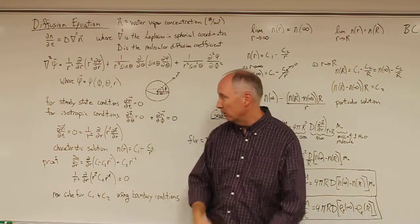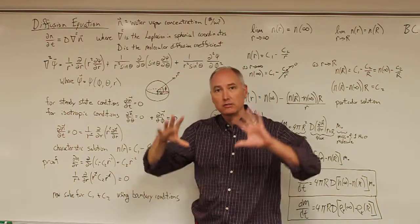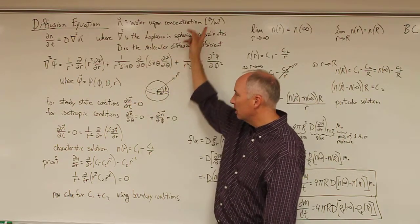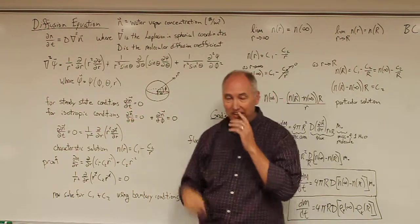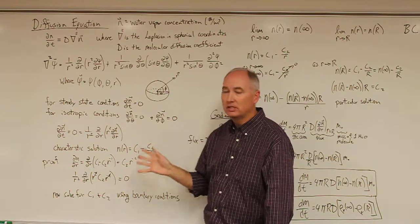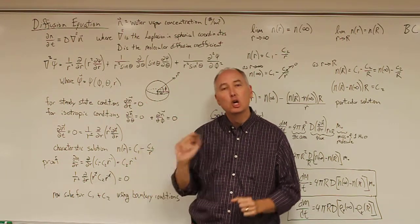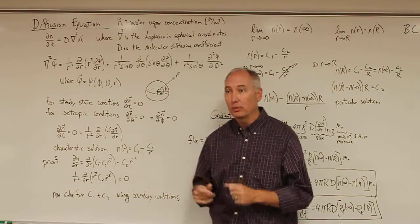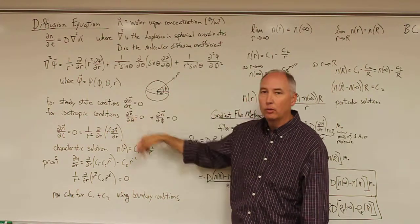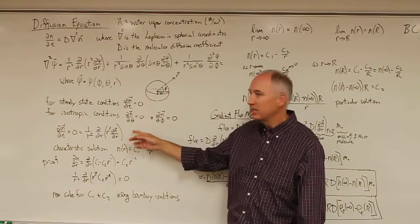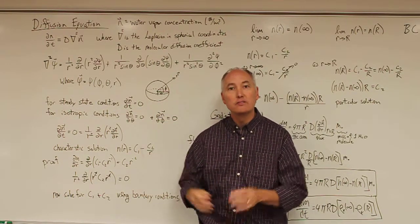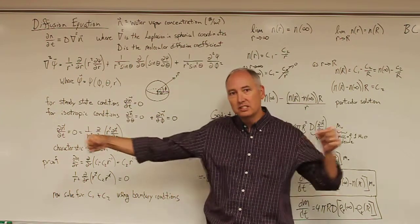We're going to make some simplifying assumptions to make this math much more tenable. The first assumption is steady state — we assume the water vapor concentration around the droplet is not changing. In the real world that doesn't actually happen, since droplets can deplete the water vapor around them, reducing the condensational growth rate. But we assume this is an updraft where water vapor is continually replenished. The second simplifying assumption is isotropic conditions — the water vapor concentration is invariant in the azimuth and zenith directions, so the only variation is with distance from the droplet's surface.